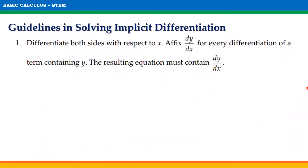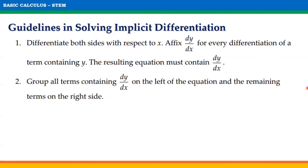Here are the guidelines for solving implicit differentiation. First step: differentiate both sides with respect to x. Affix dy/dx for every differentiation of a term containing y. The resulting equation must contain dy/dx. Second step: group all terms containing dy/dx on the left side of the equation and the remaining terms on the right side.